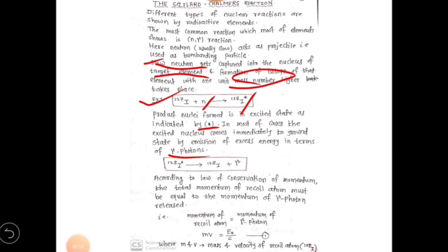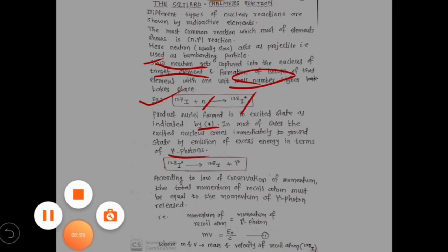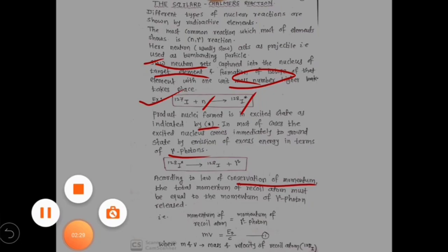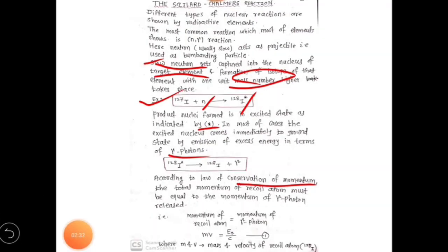Now our next part is: derive an expression for energy of the I-128 iodine isotope which is formed. This isotope formed is named as recoil nucleus. We know that momentum is the product of mass and velocity of object. Here our projectile is a neutron, so as soon as neutron is bombarded on the iodine-127 isotope, the iodine-128 isotope is being formed.